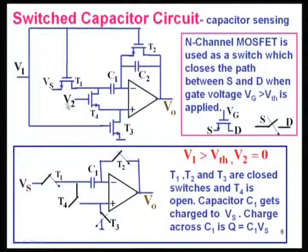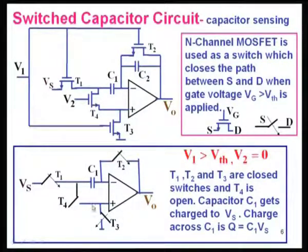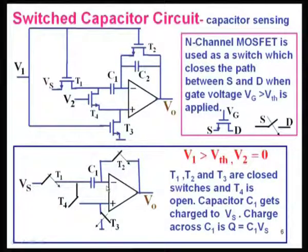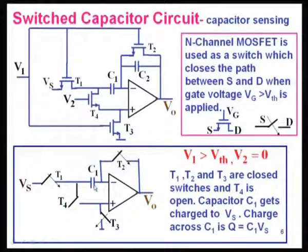When V2 = 0, T4 is open and T3 is closed, so that terminal is connected to ground and the voltage there is 0. As in the inverting circuit, if the plus terminal has voltage 0, this voltage will also be 0. So on one side of C1 the voltage is V_s, and on the other side it is 0. Therefore capacitor C1 gets charged to voltage V_s, and the charge across C1 is Q = C1 × V_s.